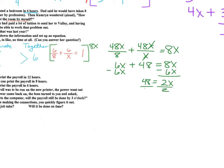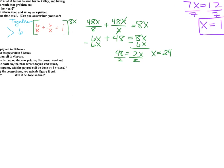So take away the 6X from both sides, and you get 2X equals 48, and then divide by 2. So X is 24. What does that mean? 24 hours what? For who?